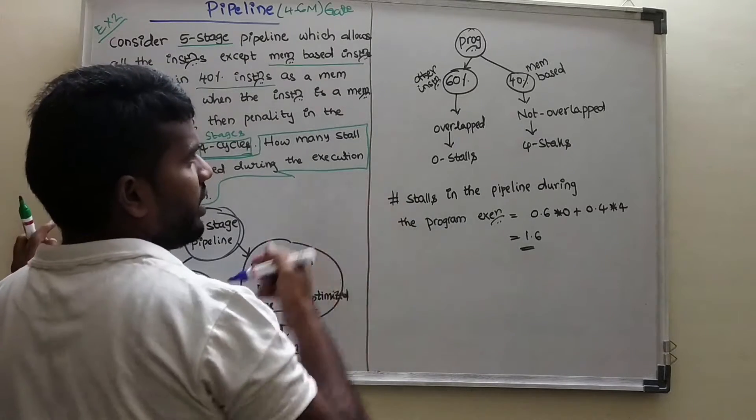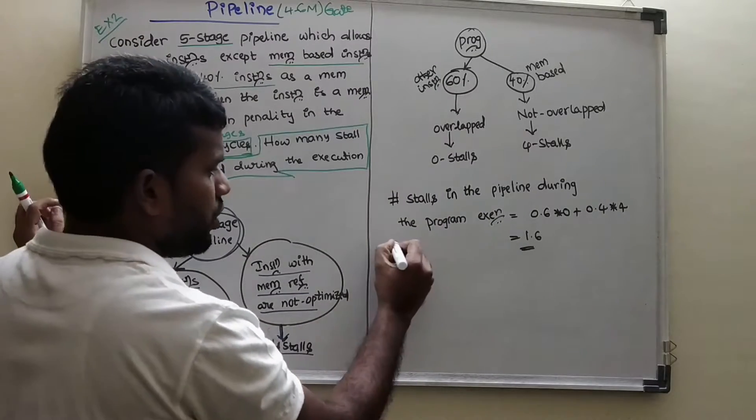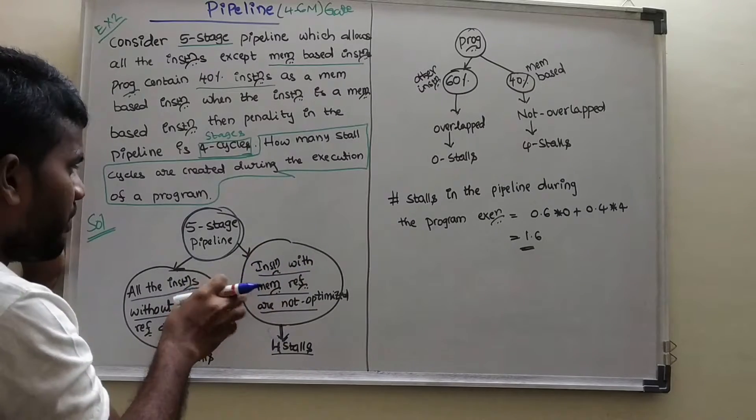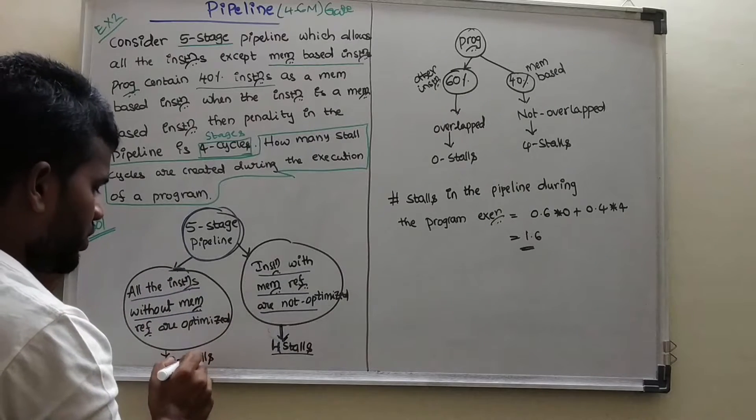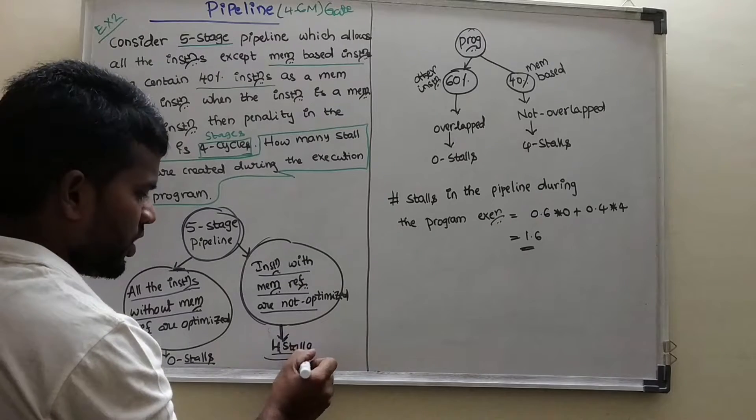Now we are going into the actual solution. Here it is the outline. What we need to do? If it is other instruction, then 0 stalls or 0 cycles. If it is memory based instructions, stalls. How many stalls? 4 stalls.